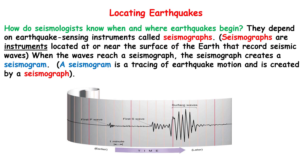How do seismologists know when and where earthquakes begin? They depend on earthquake-sensing instruments called seismographs. Seismographs are instruments located at or near the surface of the earth that record seismic waves. When the waves reach a seismograph, the seismograph creates a seismogram. A seismogram is a tracing of earthquake motion created by a seismograph.